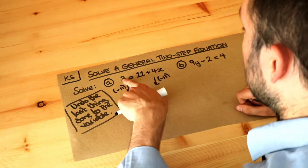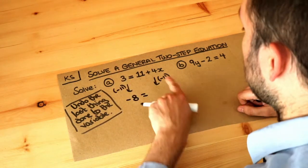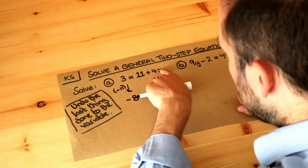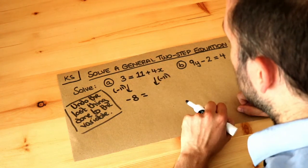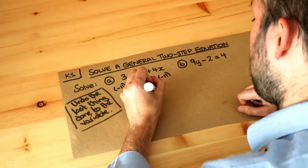So on the left hand side, 3 minus 11 is going to be negative, it's minus 8. And when we subtract 11 from the left hand side, because these two things are being added together, when we subtract 11 it gets rid of that plus 11 leaving just the 4x.